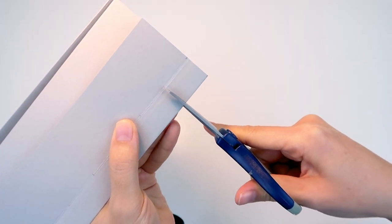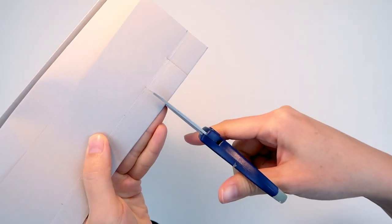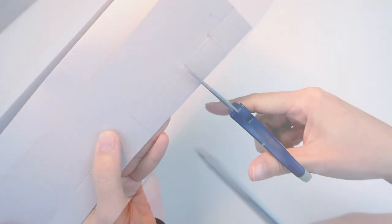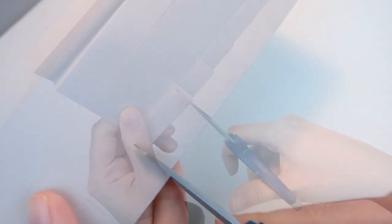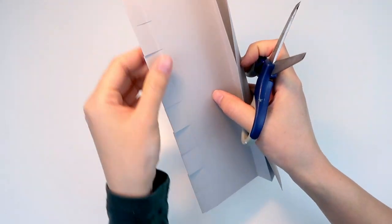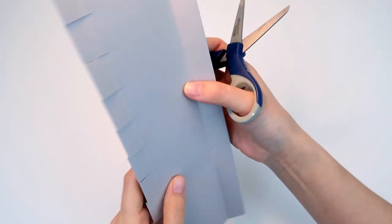Using a scissor, cut along the 1 inch marks. Only cut until the edge of the folded line. Same goes for the other mountain. Make 10 cuts.